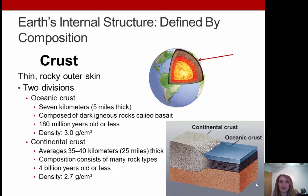Continental crust averages between 35 and 40 kilometers — about 25 miles — thick. The composition consists of many different rock types. It is 4.4 billion years old or less, and less dense at about 2.7 grams per centimeter cubed.